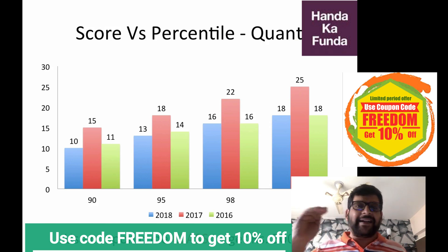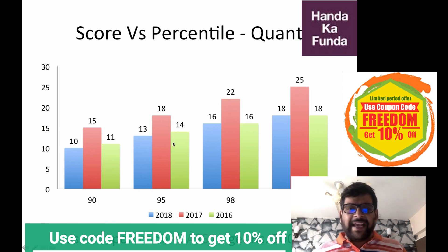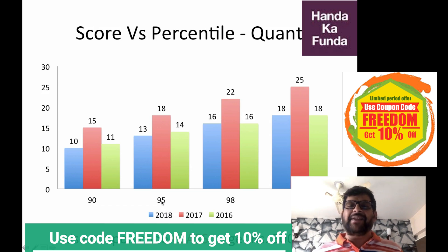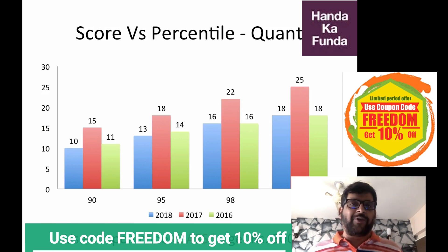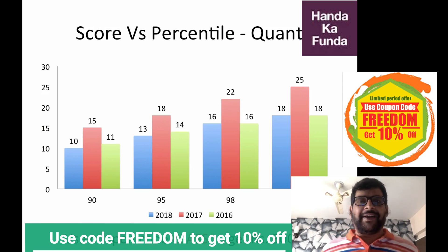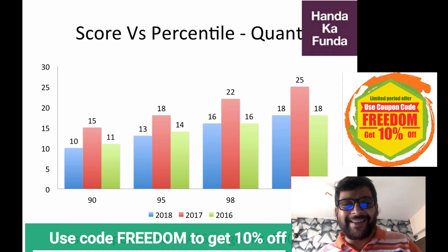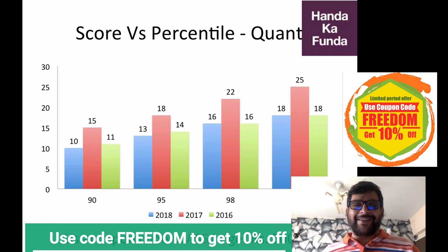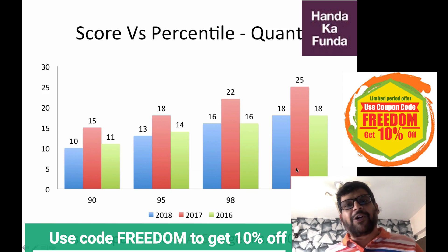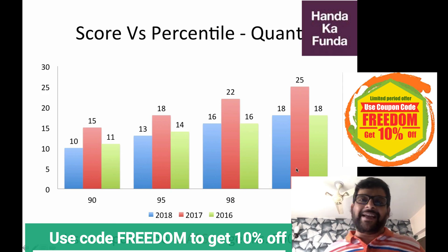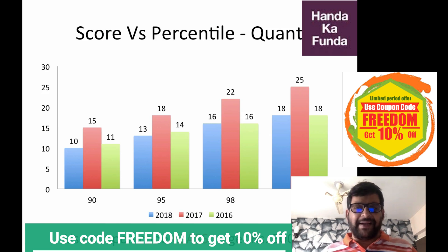Even if you are targeting the top colleges, it could be anywhere from 13-14 up to 18 questions. A 95 percentile in Quant will get you into almost all top colleges in the country. Obviously you need to do well in other sections as well, but these are the number of questions out of a total of 34 that you need for achieving a particular percentile.